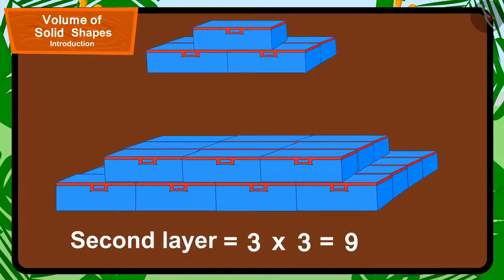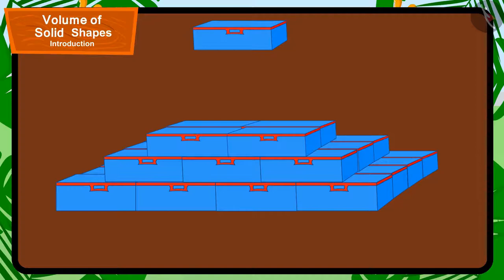This means the second layer has 3 times 3, that is 9 compass boxes.